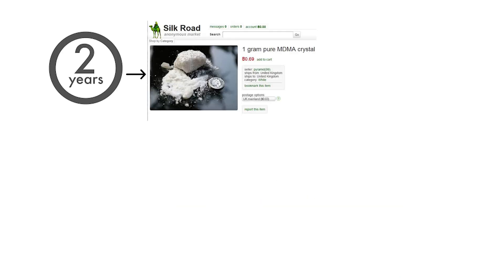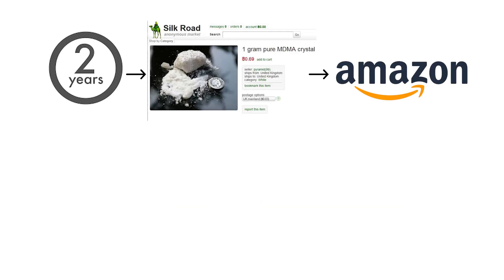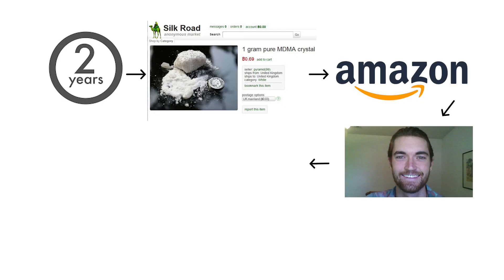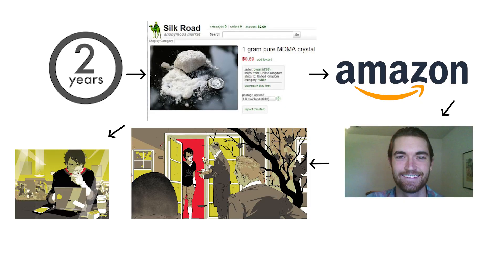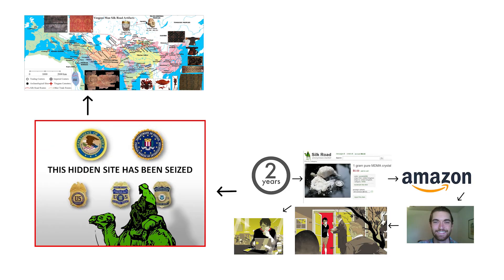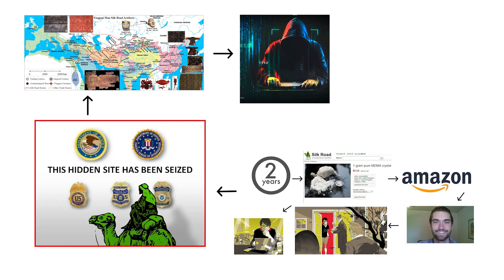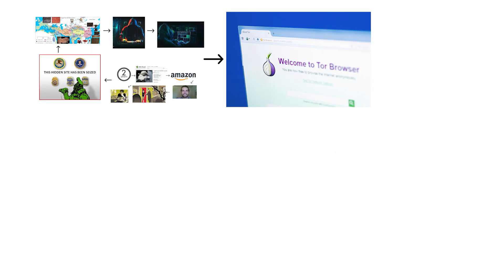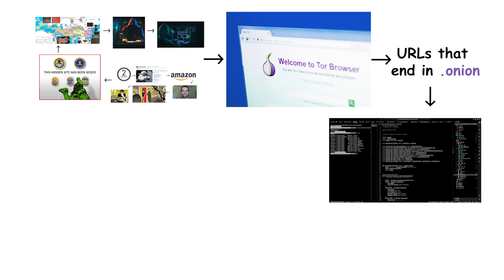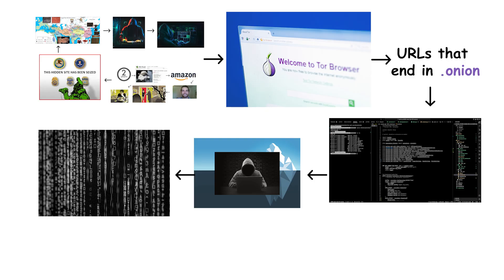For two years, it thrived like an invisible Amazon, until one careless mistake led the FBI straight to its creator. They shut it down, but they couldn't kill the concept. The dark web, by design, doesn't have a head to cut off. You can spot this level by its URLs that end in .onion, its pitch-black interfaces, and its silence — a kind of digital stillness that feels heavier than sound.